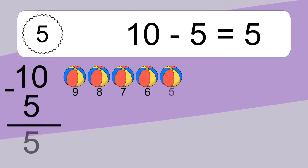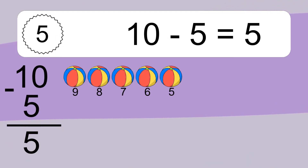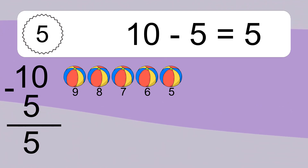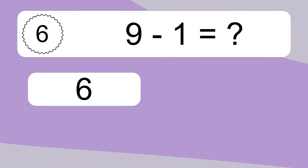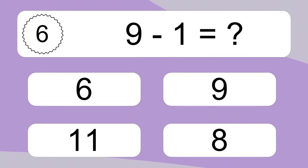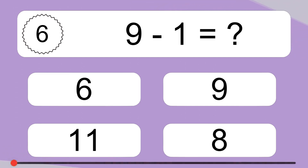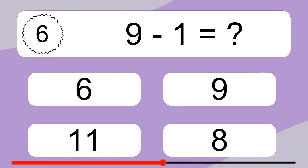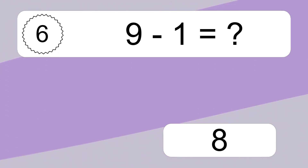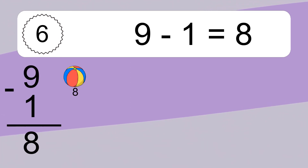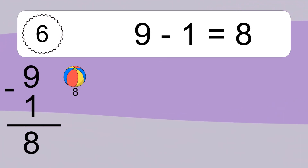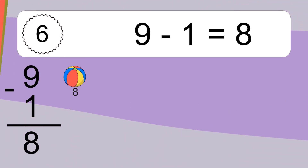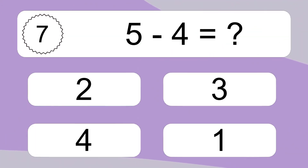Ten minus five equals five. Let's count it: nine, eight, seven, six, five. Nine minus one equals what? Nine minus one equals eight. Let's count it: eight.